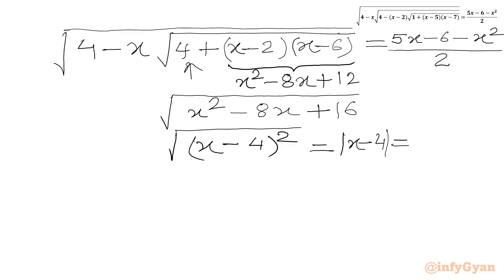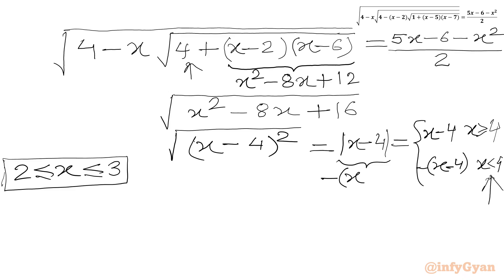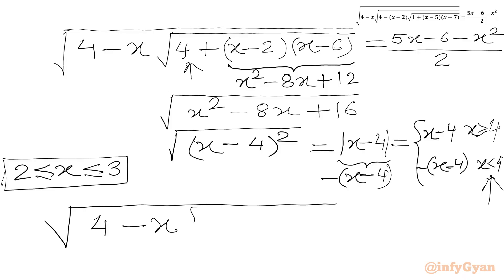So √((x-4)²) = |x - 4|. Since x lies in [2, 3], x is less than 4, so |x - 4| = -(x - 4) = 4 - x. Our expression at this stage becomes √(4 - x) · (-(x - 4)), which gives √(4 - x) · (4 - x), and the RHS is (5x - 6 - x²) / 2.